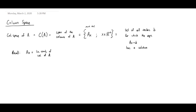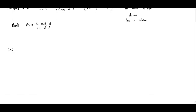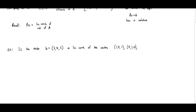So I just wanted to do some small examples. Let's consider the following set of questions. Is the vector B, which I'm going to define to be the vector (3, 4, 3), a linear combination of the vectors (1, 0, 1), (0, 1, 0), and (2, -1, 2)? Span means all linear combinations, so that's what we want to check.